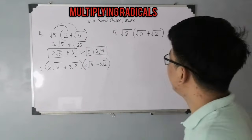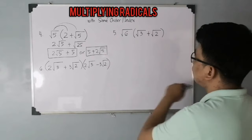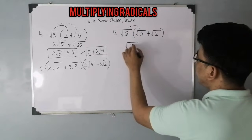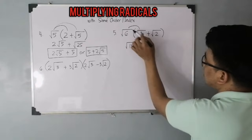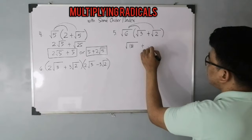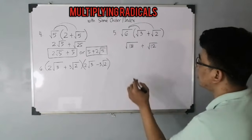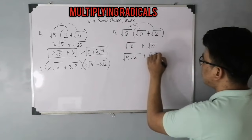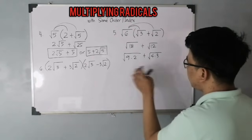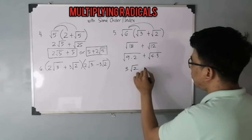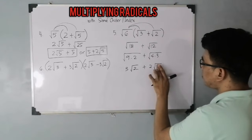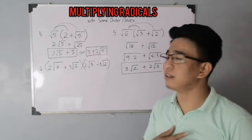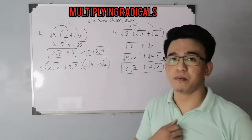Let's move on with item number 5. We have the square root of 6 times the quantity square root of 3 plus square root of 2. Using the distributive property, square root of 6 times square root of 3 gives the square root of 18, and square root of 6 times square root of 2 gives the square root of 12. Factoring: √18 = √(9×2) and √12 = √(4×3), which simplifies to 3√2 plus 2√3. This is the correct answer for item number 5.